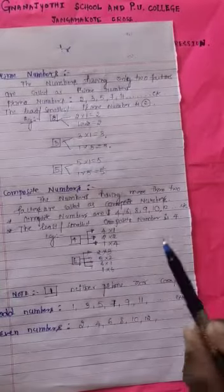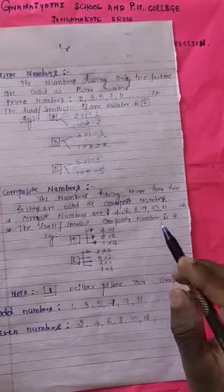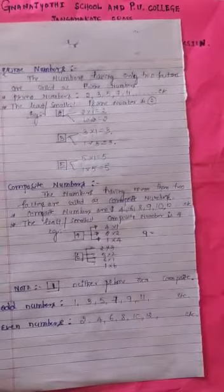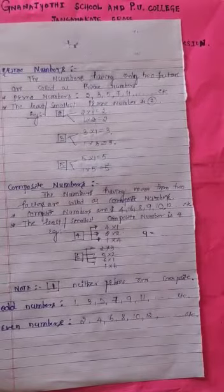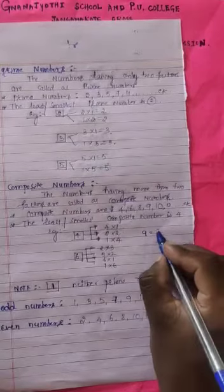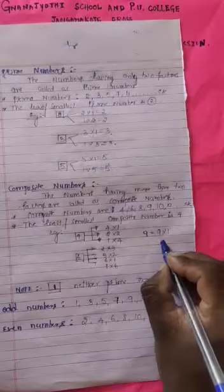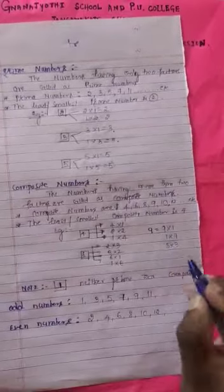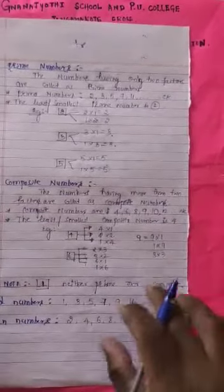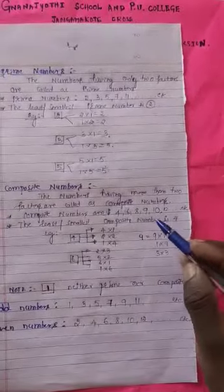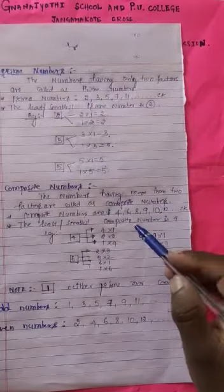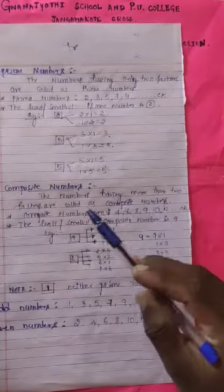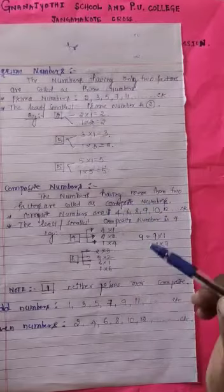Next, for example, I am going to take 9. The factors of 9 are: 9 × 1 = 9, 1 × 9 = 9, and 3 × 3 = 9. So 9 is also a composite number because the numbers having more than two factors are called as composite numbers.